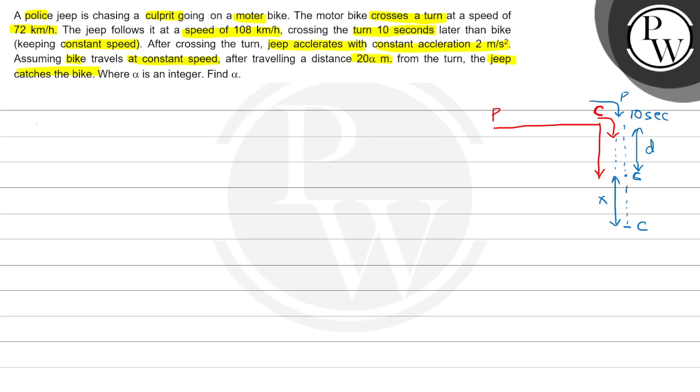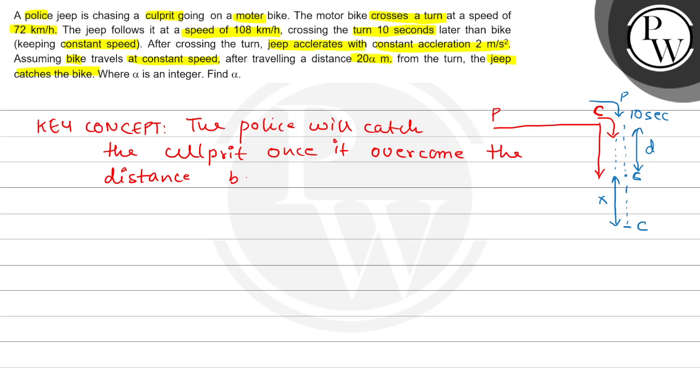The key concept is: the police will catch the culprit once it overcomes the distance between them, that is D, which was the first 10 seconds lead, plus X. Here we will use the equation of motion given by S equals UT plus half AT squared.